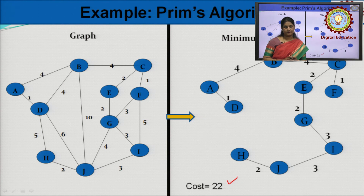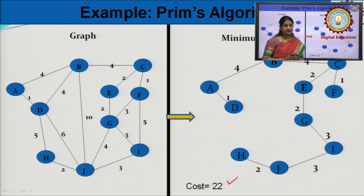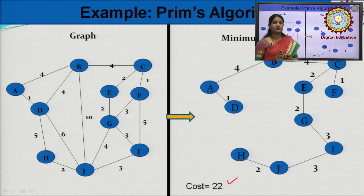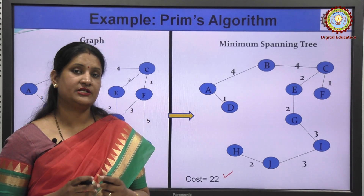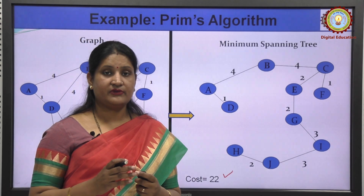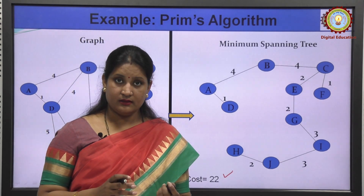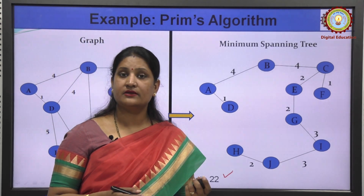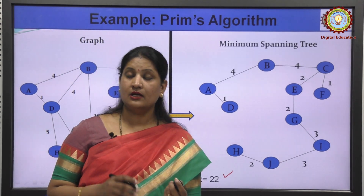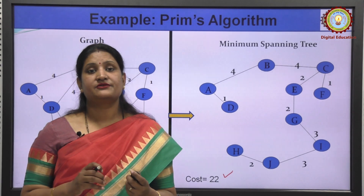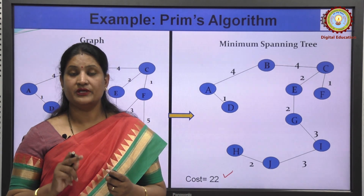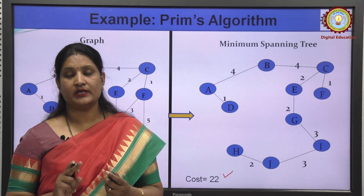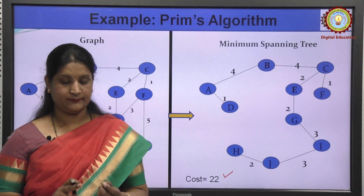It is not necessary that the MST is always unique. It depends on the edge weights. If the edge weights are identical, there can be more than one spanning tree possible. If the edge weights are different, there is only one unique minimum spanning tree.